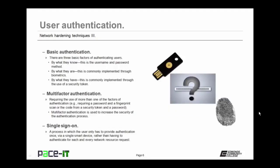Let's talk about basic authentication of the user. There are three basic factors for authenticating users. There's by what you know — this is the username and password method. By what you are — this is commonly implemented through biometrics. And finally, there is by what you have — this is commonly implemented through the use of security tokens. These are the three basic factors for authenticating users.